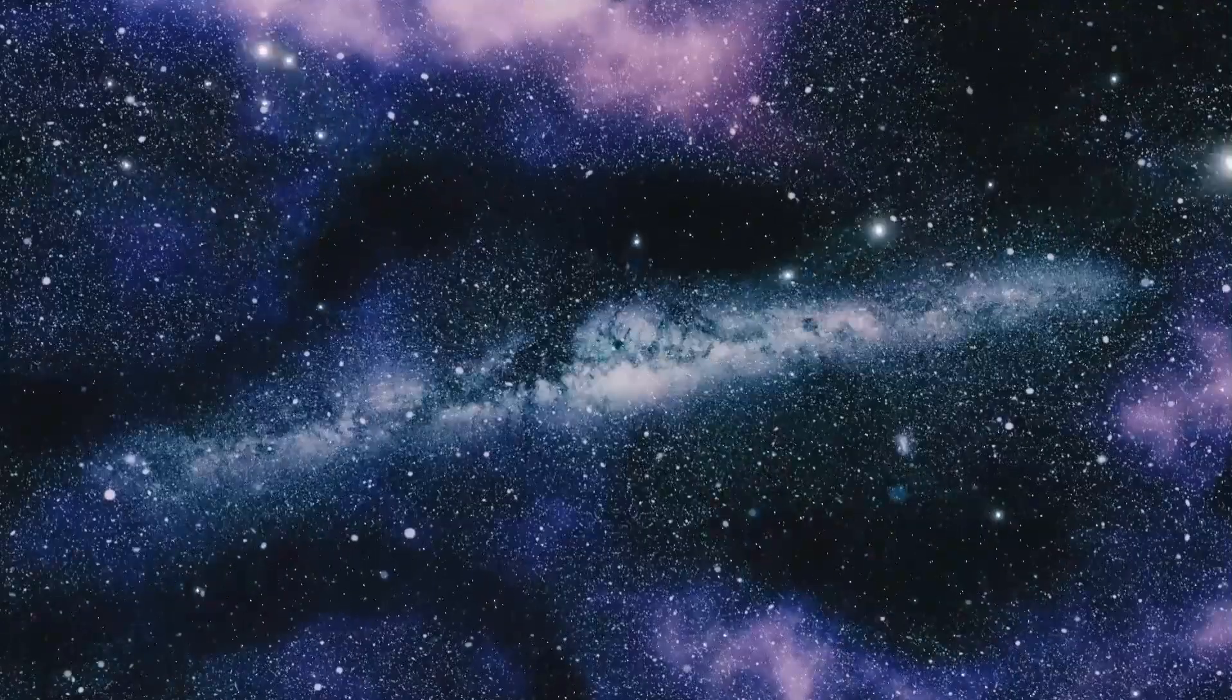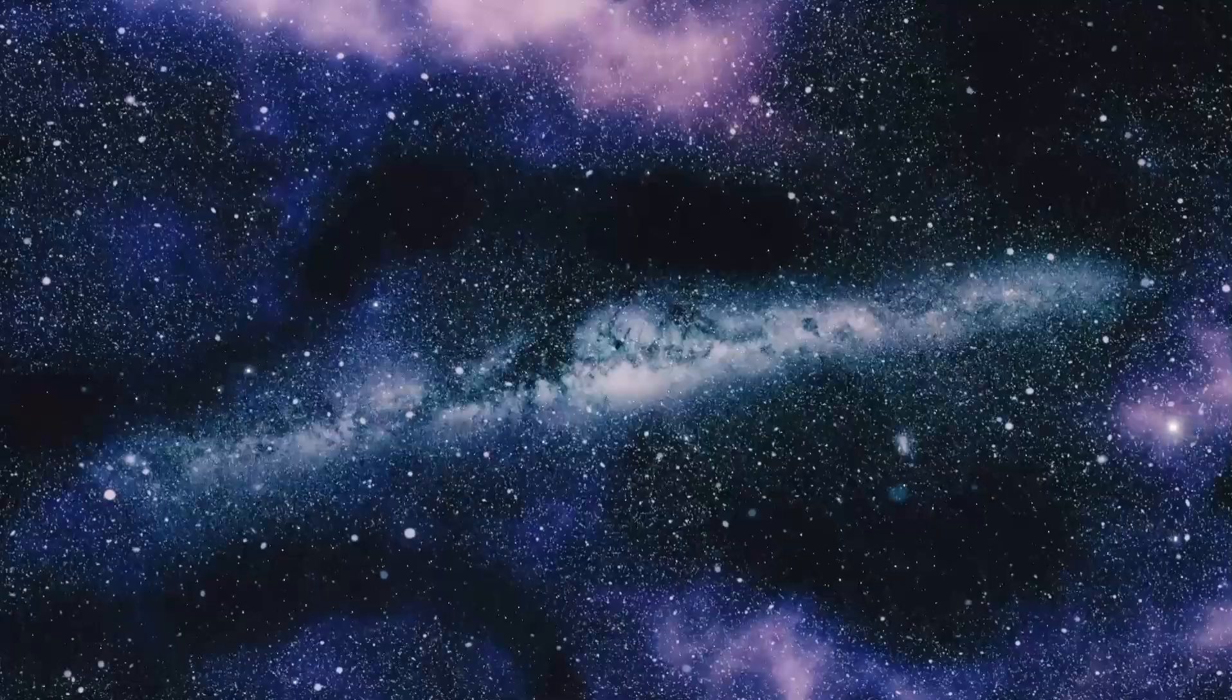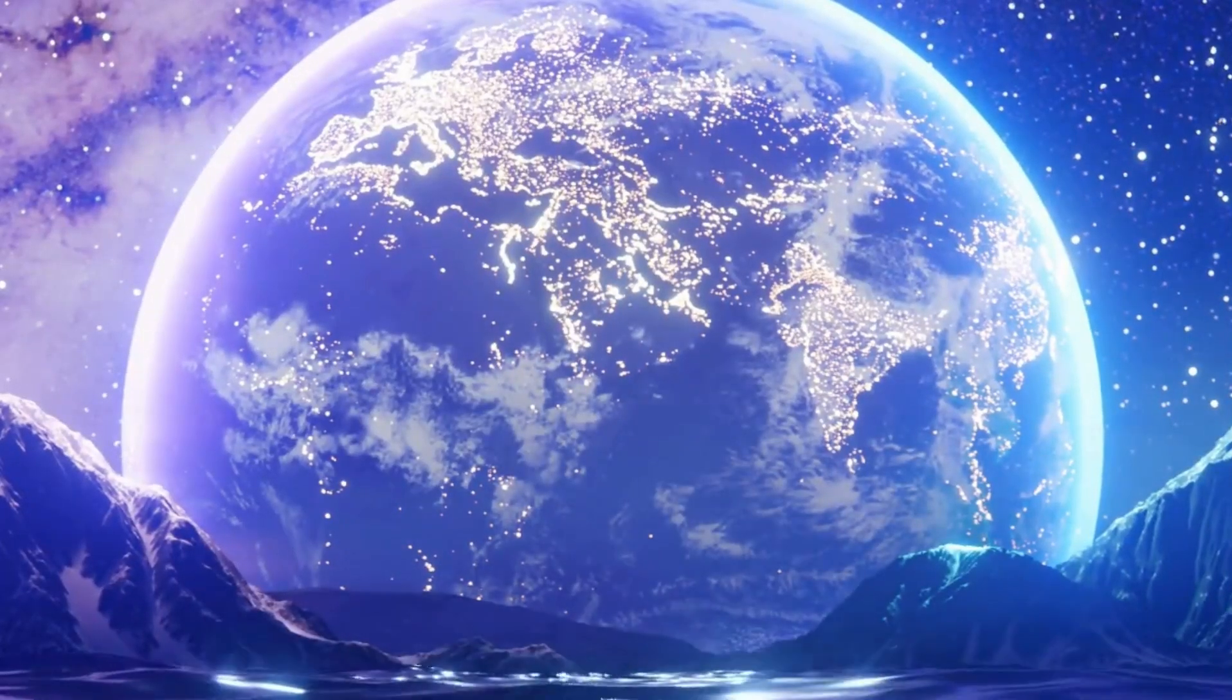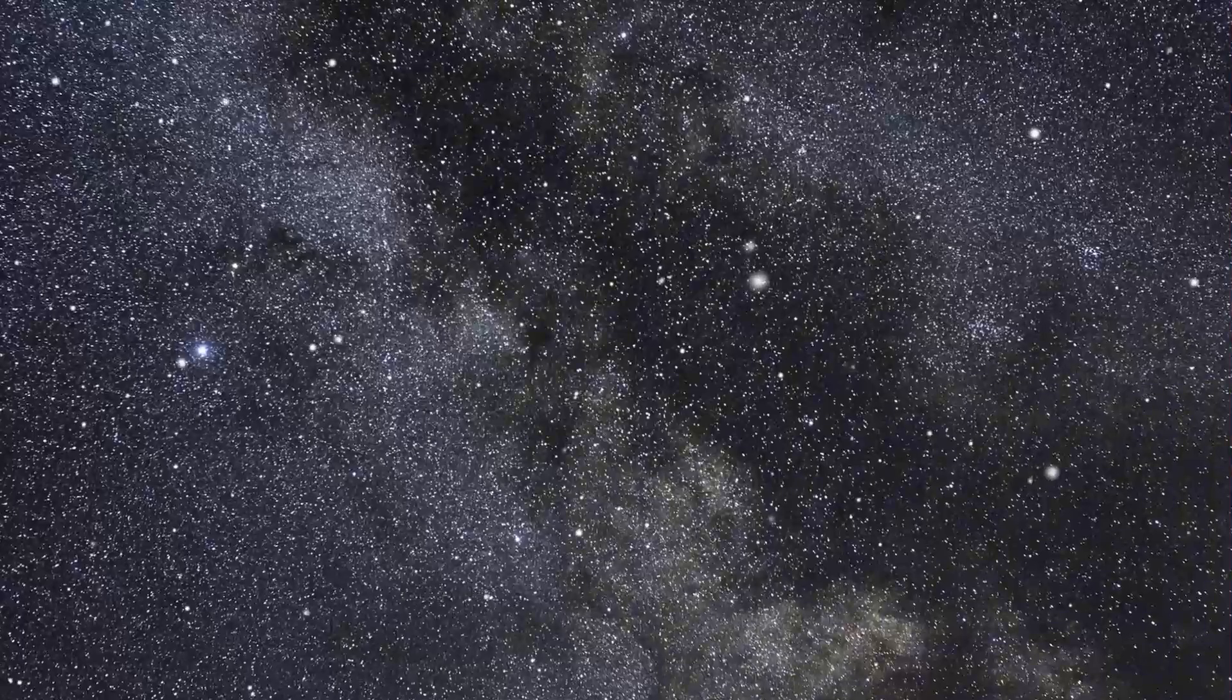Like Earth, Proxima Centauri b experiences day and night cycles while circling its star. The nights are significantly colder, and the days are scorching.